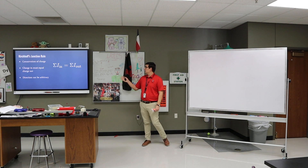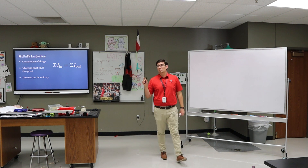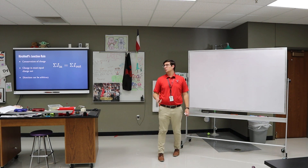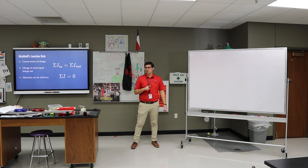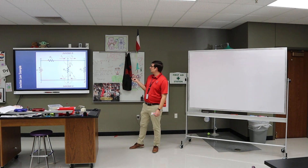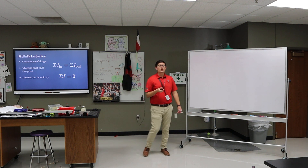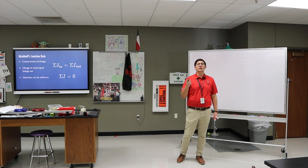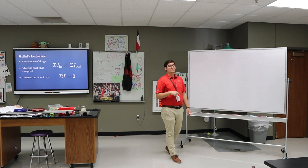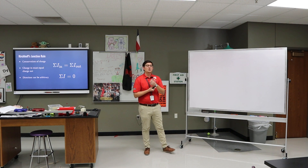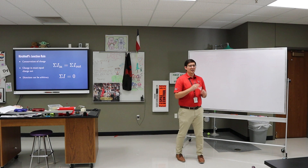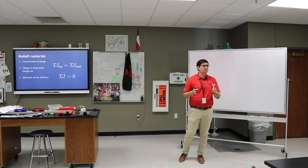Most often you'll see people write it as: total current in equals total current out. But I actually prefer to write it as: the total current for any junction equals zero. As we start looking at different things, you're basically going to have to decide which way you think the current is going. You're not always going to be right, and that's okay. You just make your best guess, put it in the equation, and it'll work out.